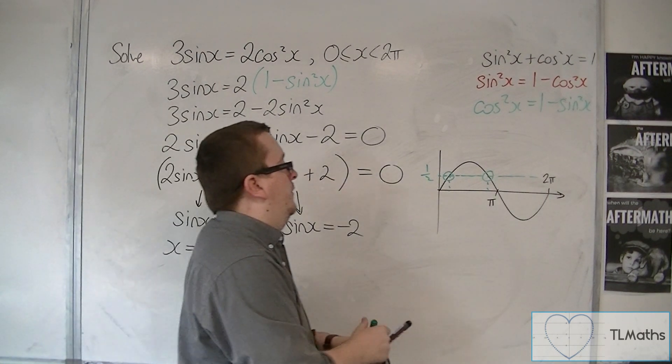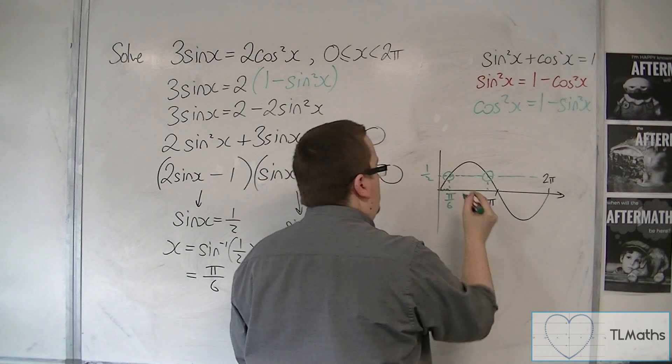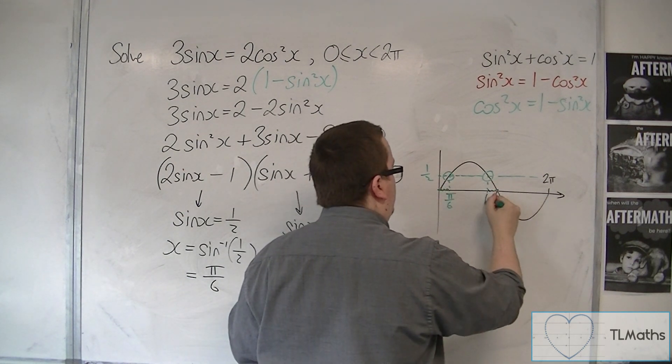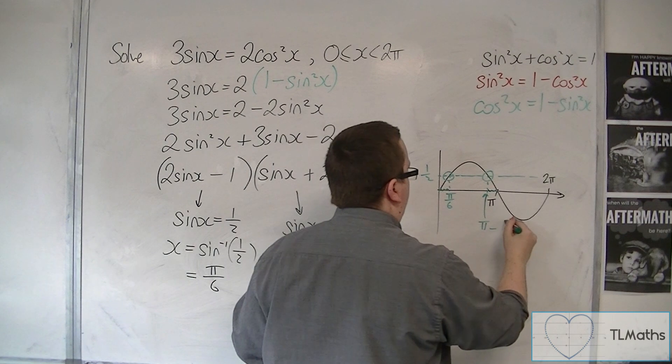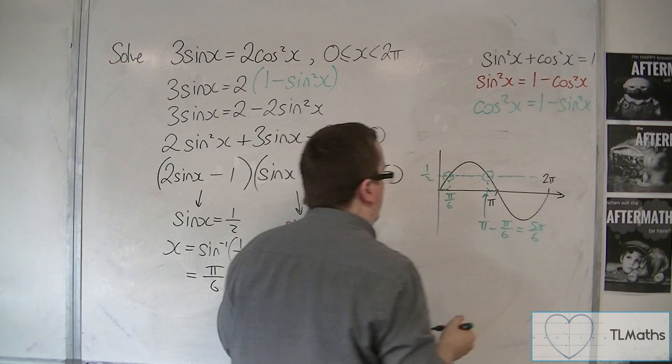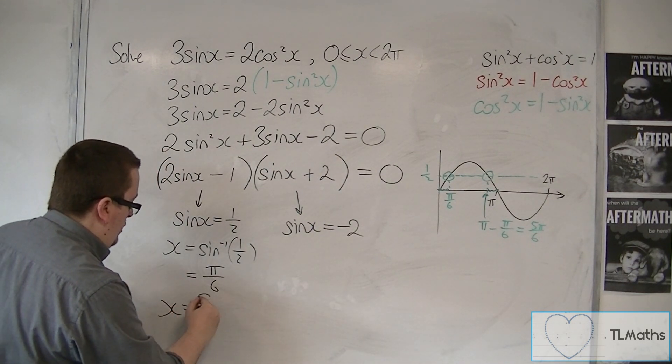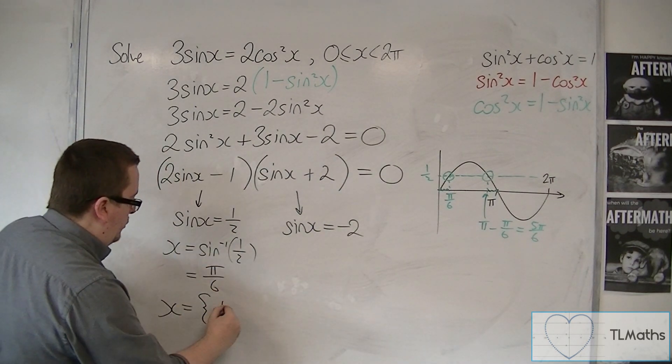So this solution here is pi over 6. So if that distance is pi over 6, so is that distance. So pi take away pi over 6 gets me 5 pi over 6. So that is a pair of solutions coming from this first equation.